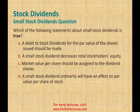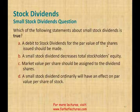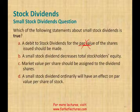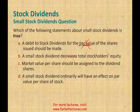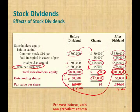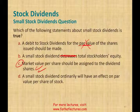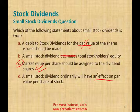Which of the following is a true statement about small stock dividend? A — debit to stock dividend for the par value of the shares: No, that's for large stock dividend. B — a small stock dividend decreases total equity: No, total equity is the same before and after. C — market value per share should be assigned to the dividend shares: Yes, this is correct for small stock dividend. D — a small stock dividend will have no effect on par value: it does have an effect on par value. The answer is C.